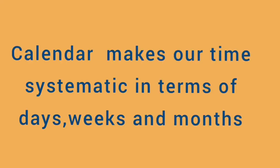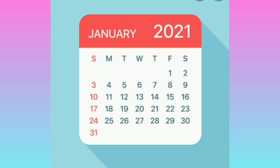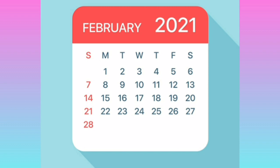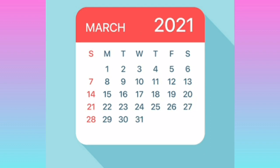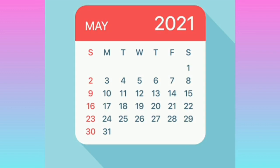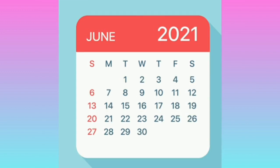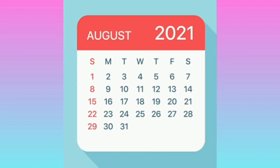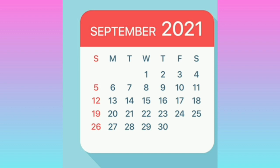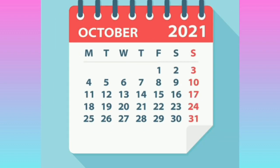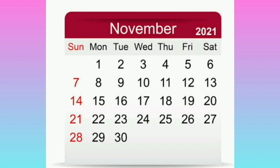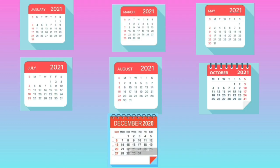A calendar makes our time systematic in terms of days, weeks, and months. The twelve months of the year are: January, February, March, April, May, June, July, August, September, October, November, and December.